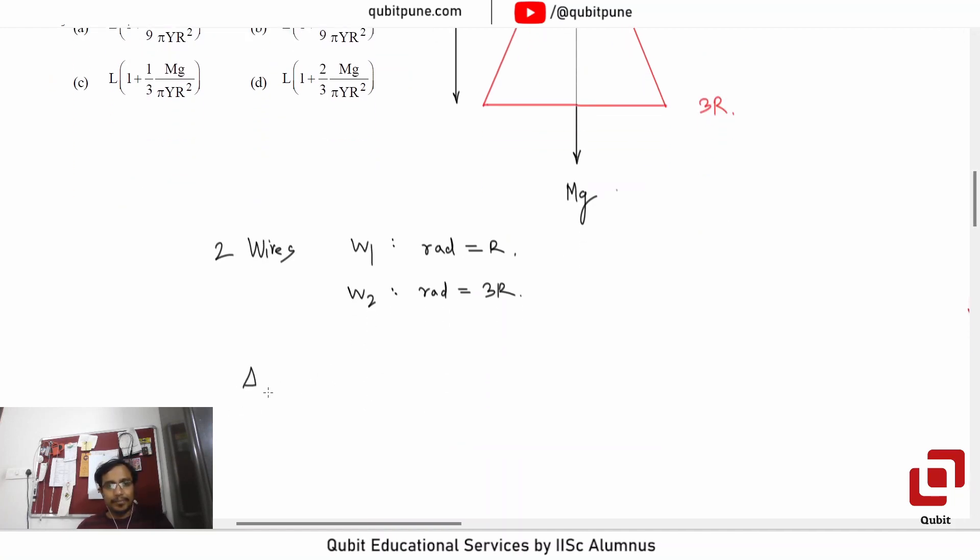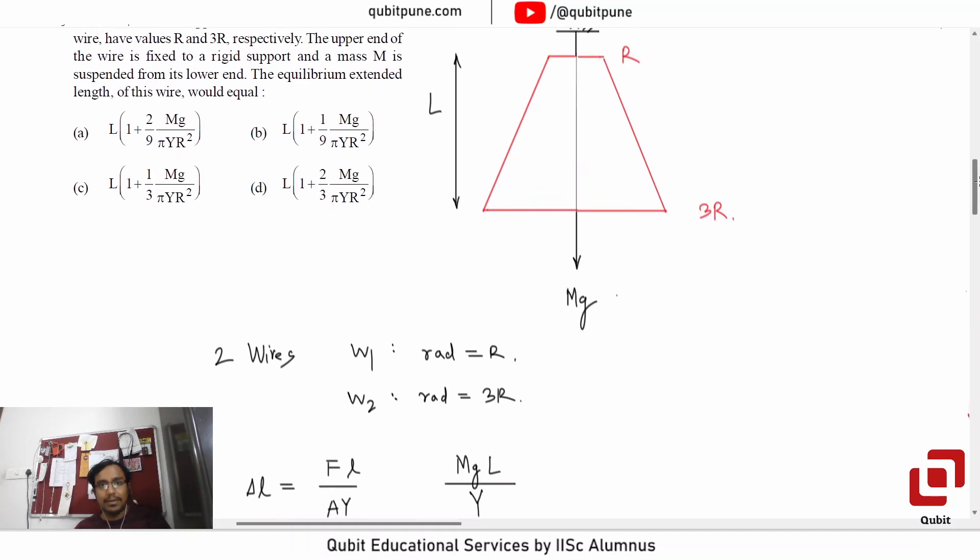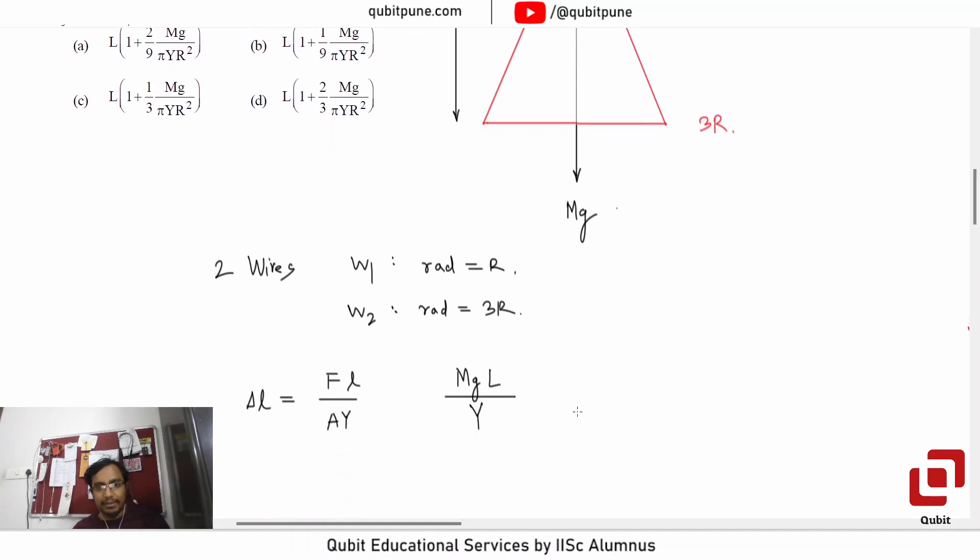And under the same loading condition, same length. So what is delta L by Hooke's law? Delta L is F L upon A Y. I can write F upon A is our sigma, delta L upon L is our strain. F is same, so F is MG. L is the length capital L. Y is also same. So what is different is radius, so area will be different.